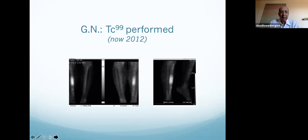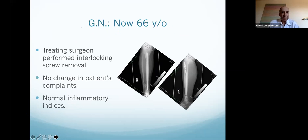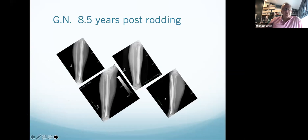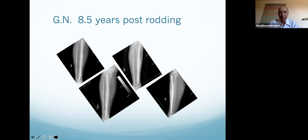Another doctor got a bone scan — it showed it was hot there. I never get nuclear medicine scans except for one thing: the only way they help me is if it's a stage one osteomyelitis. The treating surgeon saw that and decided to dynamize the rod — as you'd guess, nothing happened. The bone scan was indicative of a non-union or weak bone. Eight and a half years later she was in the same state.